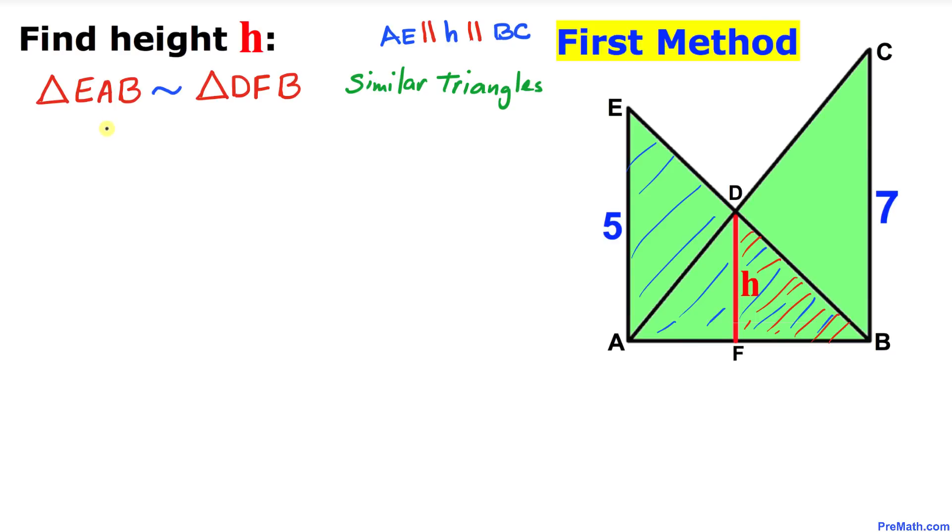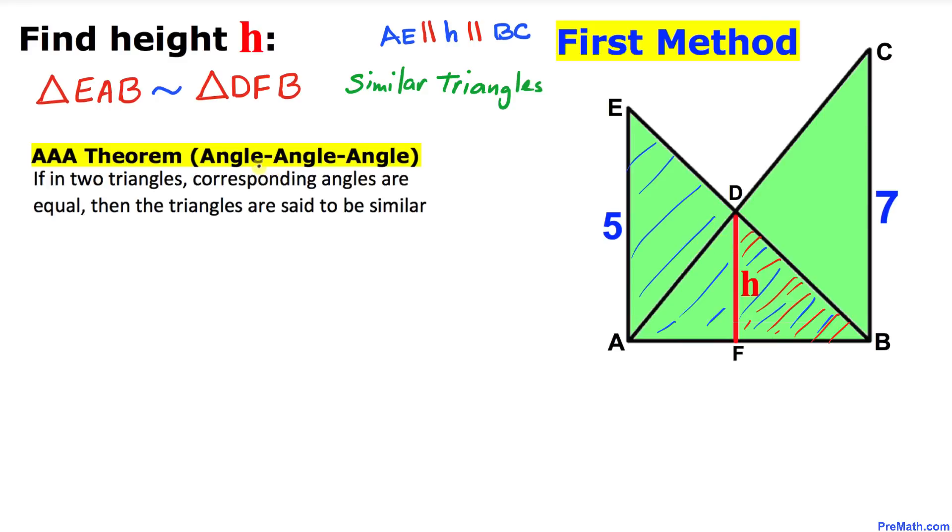Let's focus on these two triangles. The triangle that I have shaded EAB and the other triangle DFB. These both are similar triangles according to angle-angle-angle theorem, because these two triangles share this angle B. And since these two walls are parallel, so this angle is congruent to this angle.